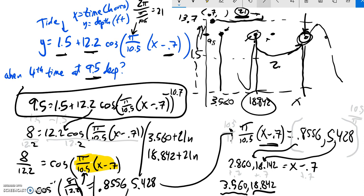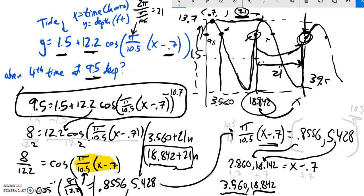That distance from here to here is 21. So if I take this value, add 21 to it, I'll get that x value. So just letting n be one is just one period past that. So it must be 39.842 hours later.